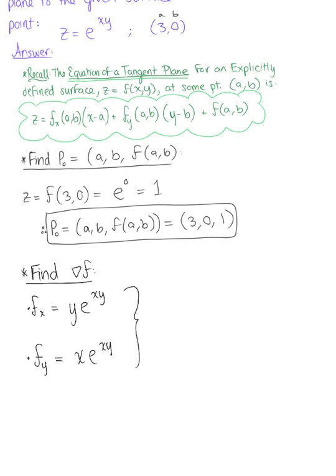And evaluating at the ordered pair 3, 0, the partial derivative with respect to x becomes 0 times the natural exponential raised to the 0, which is just 0.